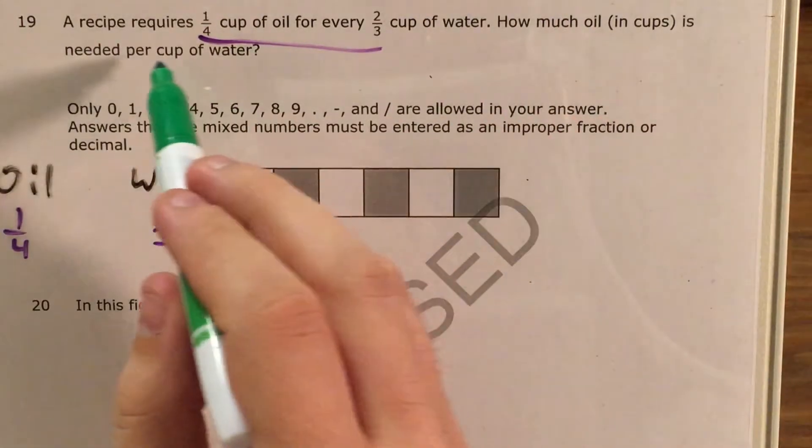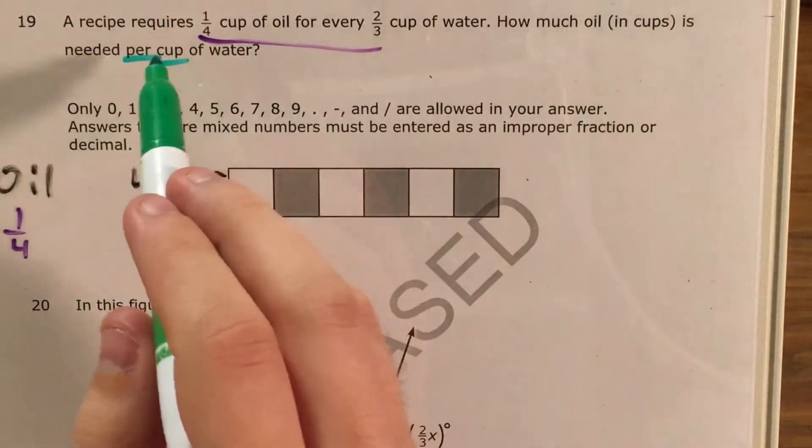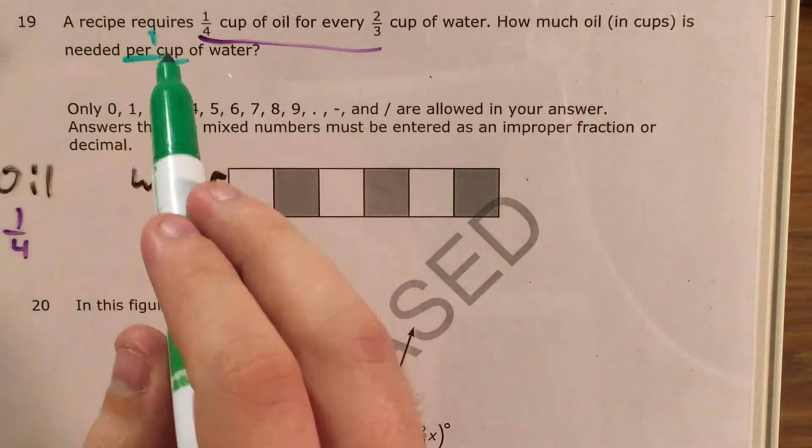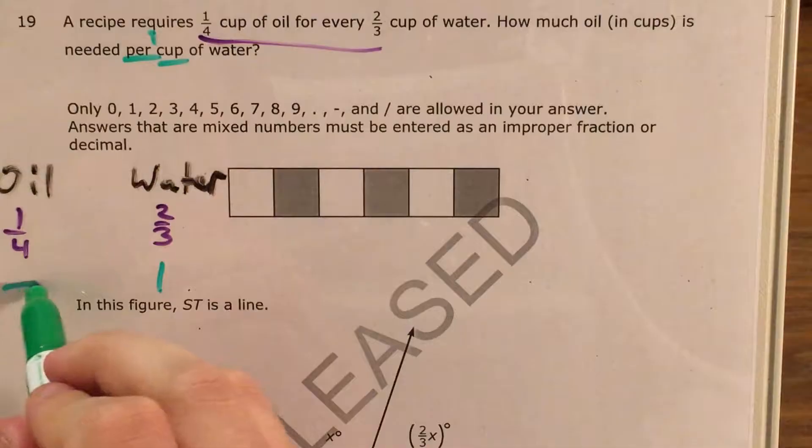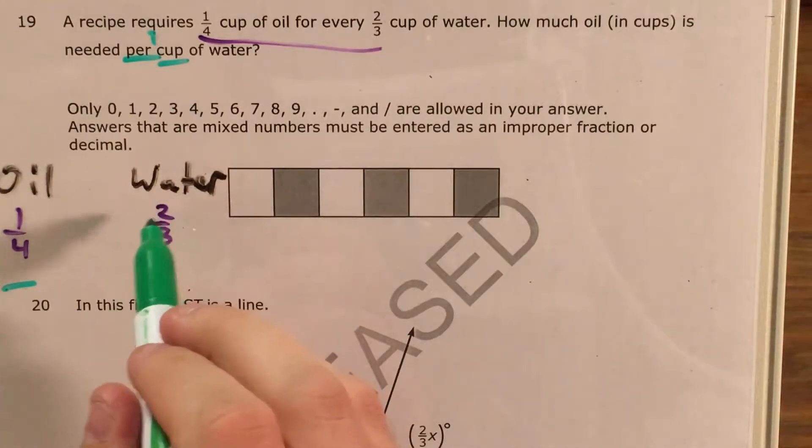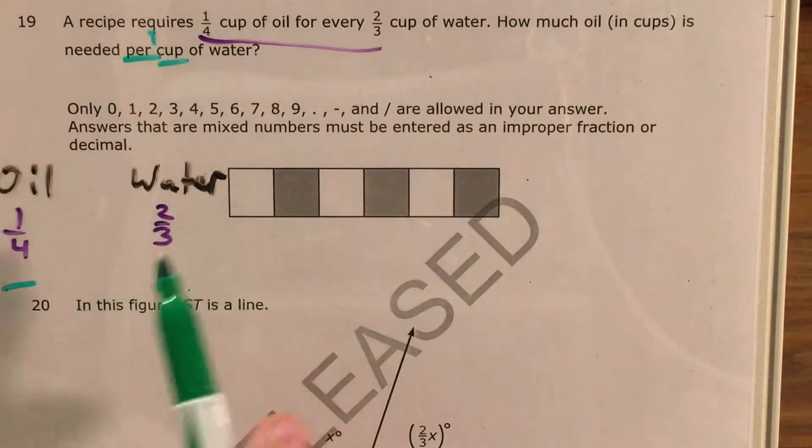And now, if I see how much oil is needed per cup, I'm thinking that's one cup. So, a quarter cup of oil needs two-thirds of a cup of water. So, how much oil will we need for one cup of water? That's the entire point of this question.